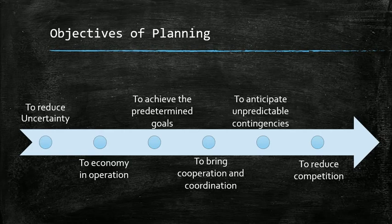Third and most vital is to achieve predetermined goals. Every organization has certain goals — be it profit, servicing, or anything else. Your planning system has to be oriented around those goals, setting up activities to accomplish them. Planning also brings cooperation and coordination among various sections of the organization. Rivalries and conflict among departments can be avoided through planning, and it avoids duplication of work.